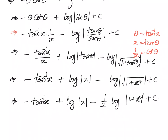So you can solve this problem using trigonometric substitution or directly by integration by parts. Both methods give the same answer: minus tan inverse x by x plus log x minus half log of 1 plus x square plus c.